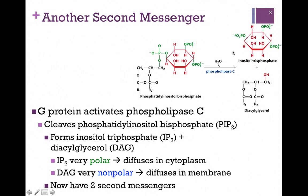You'll notice that inositol trisphosphate, or IP3, has those three phosphate groups, and so it's very polar, very hydrophilic, readily diffusable in the cytoplasm. And remember, that's the definition for a second messenger — it has to be able to diffuse in some environment. That's true for IP3; it diffuses in the cytoplasm, and that's where it's going to exert its effect.